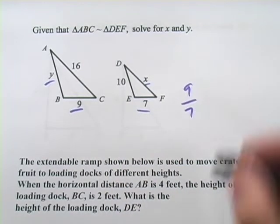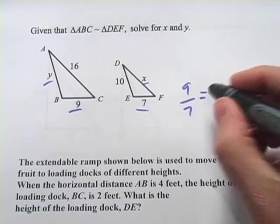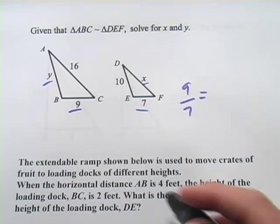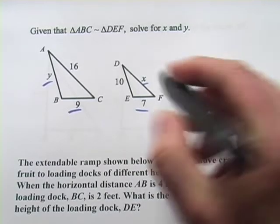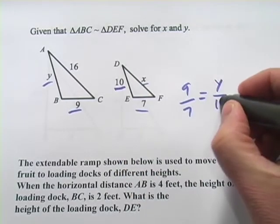We'll put big triangle over little triangle and then we'll have to do two different calculations. Let's solve for Y first and since we're putting big triangle over little triangle we'll put Y over the side it corresponds to which is 10.